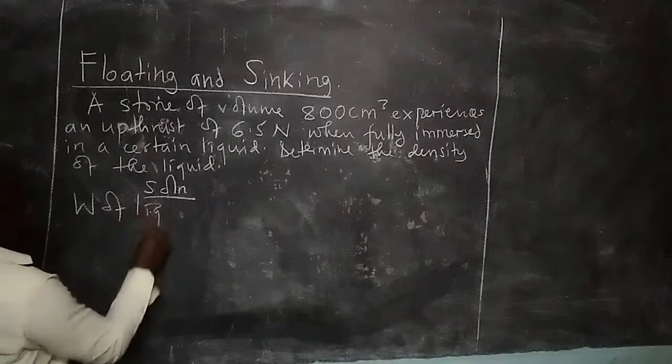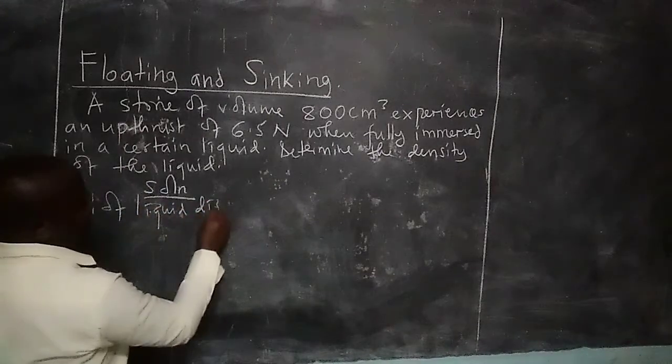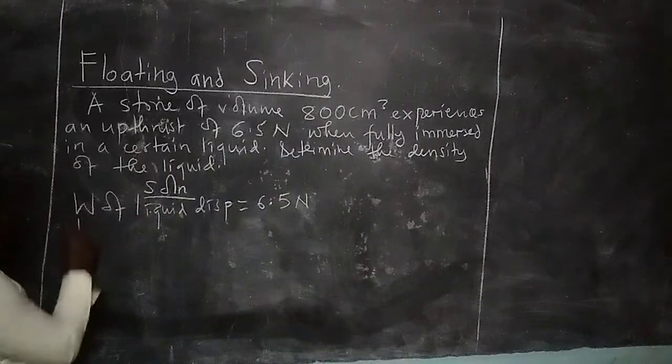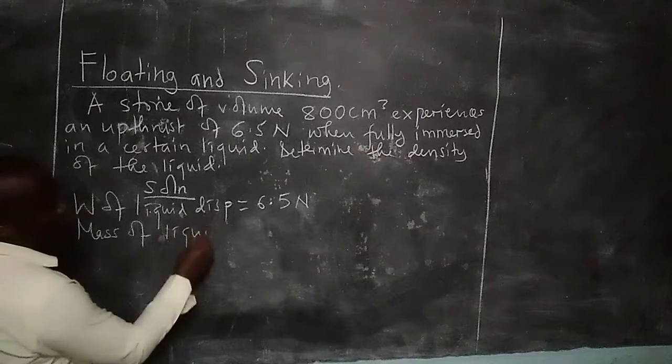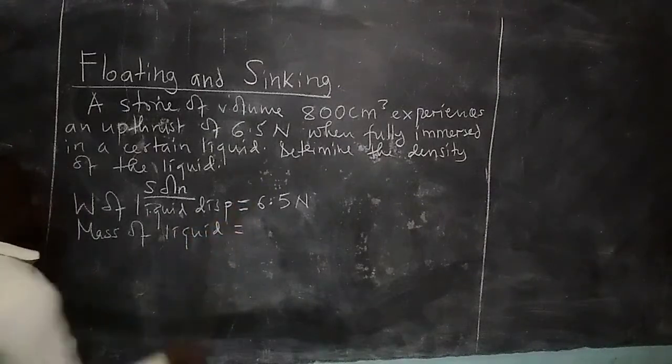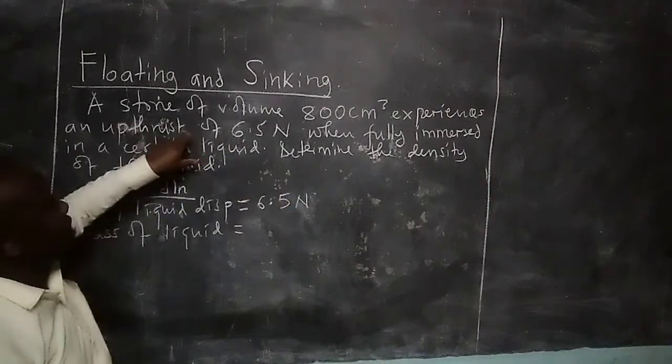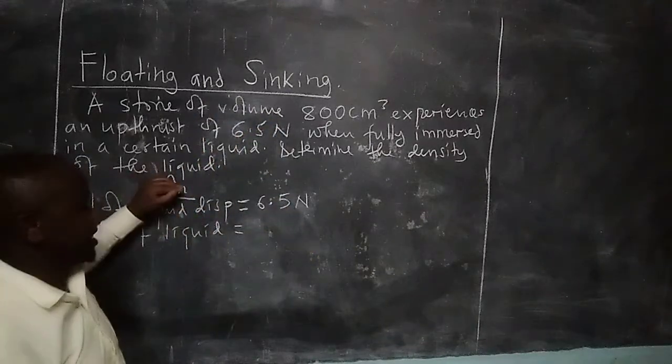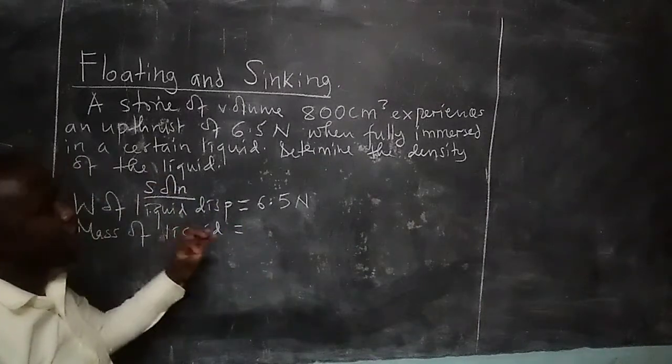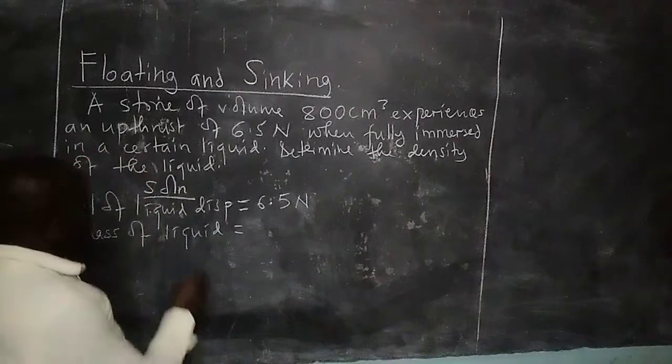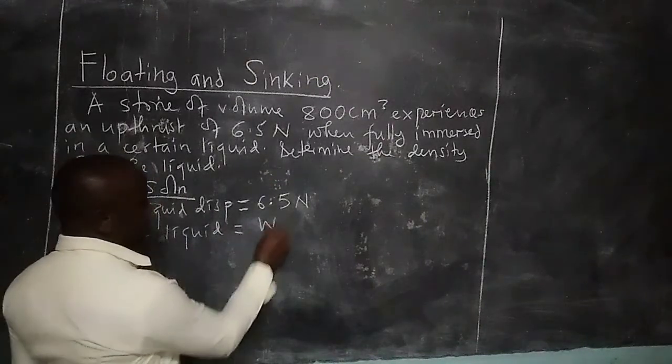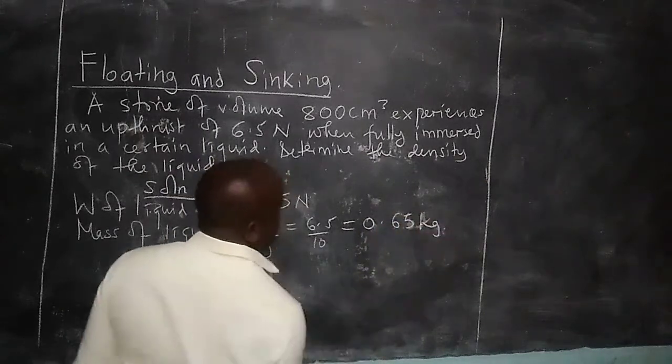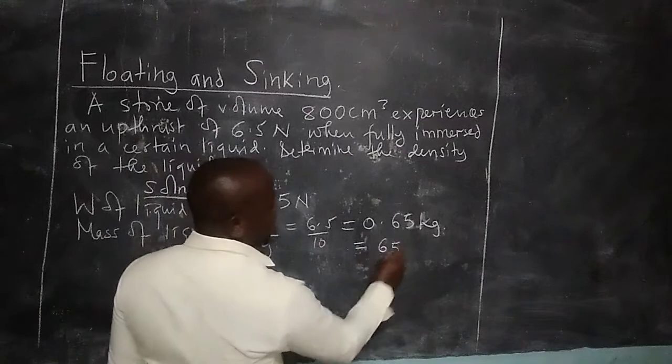Weight of liquid displaced will be equal to 6.5 newtons. We use the mass of the liquid because its weight can be determined. By Archimedes principle, the upthrust a body experiences when fully immersed equals the weight of liquid displaced. Therefore, we can get the mass by saying that mass equals the weight 6.5 divided by g, which equals 0.65 kilograms, which is equal to 650 grams.